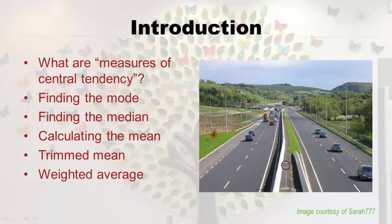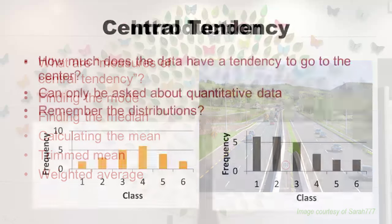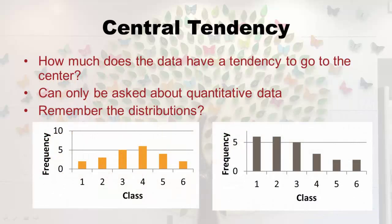So what are measures of central tendency? I'm going to explain why we call it that, then talk about the three big ones — mode, median, and mean — and explain how to calculate those. Then towards the end of the lecture, I'm going to go into some special situations: one is called a trimmed mean, and the second is a weighted average.